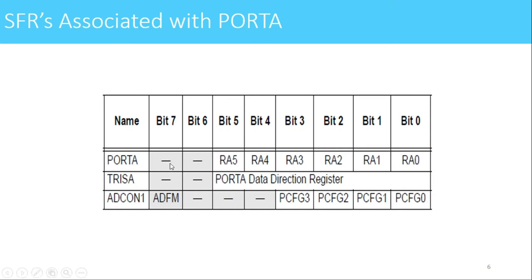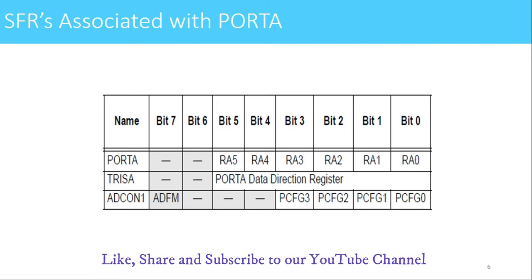Port A is 6 bits wide, so the lower 6 bits (bit 0 to bit 5) are the port bits. To make any bit either 1 or 0, we modify that particular bit in the PORTA register, and that particular pin will be set accordingly. TRISA is used for setting direction — putting 1 or 0 at a bit position makes that pin input or output. ADCON1 is used for making some pins function as ADC input pins, as digital IO pins, or a combination of both.